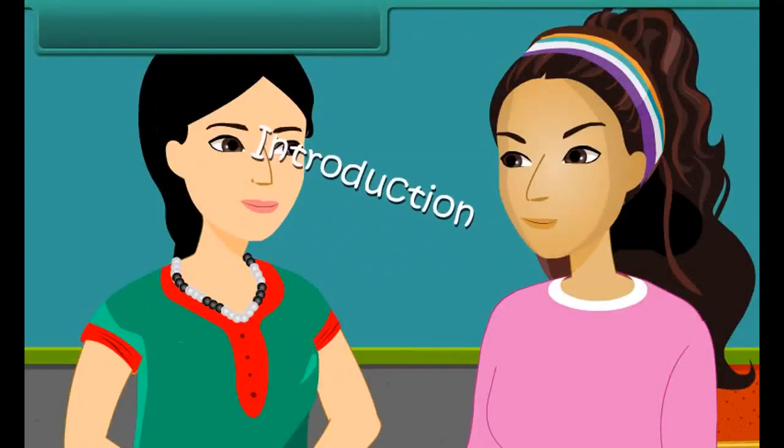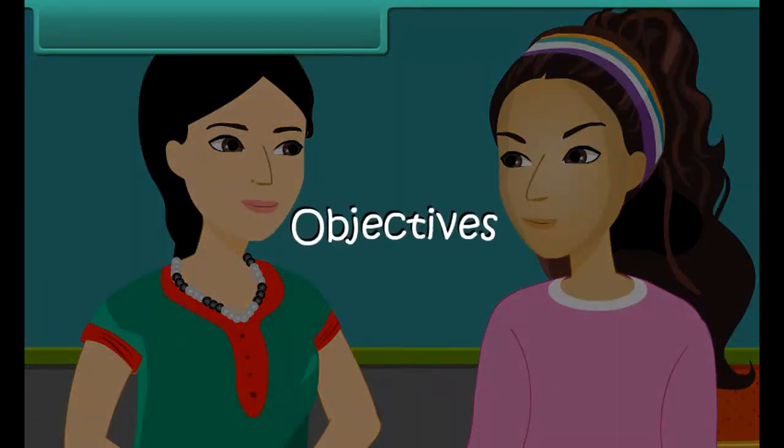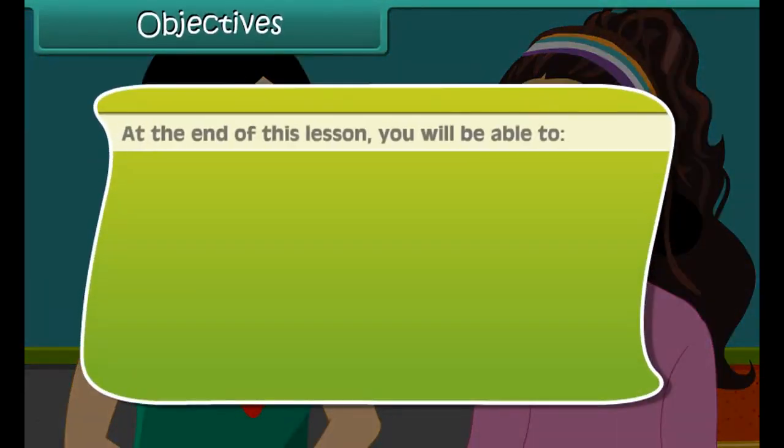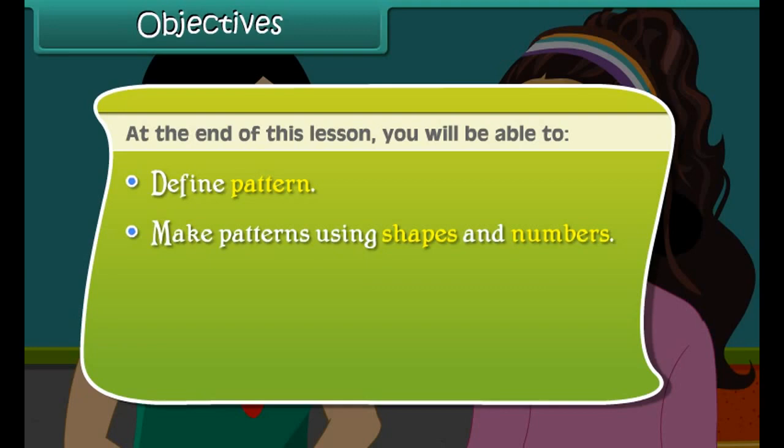What a beautiful pearl necklace. If you notice, there are three white pearls and three black pearls, and so on and so forth. Looks like they're arranged in a particular sequence or pattern. Let us learn more about pattern today.